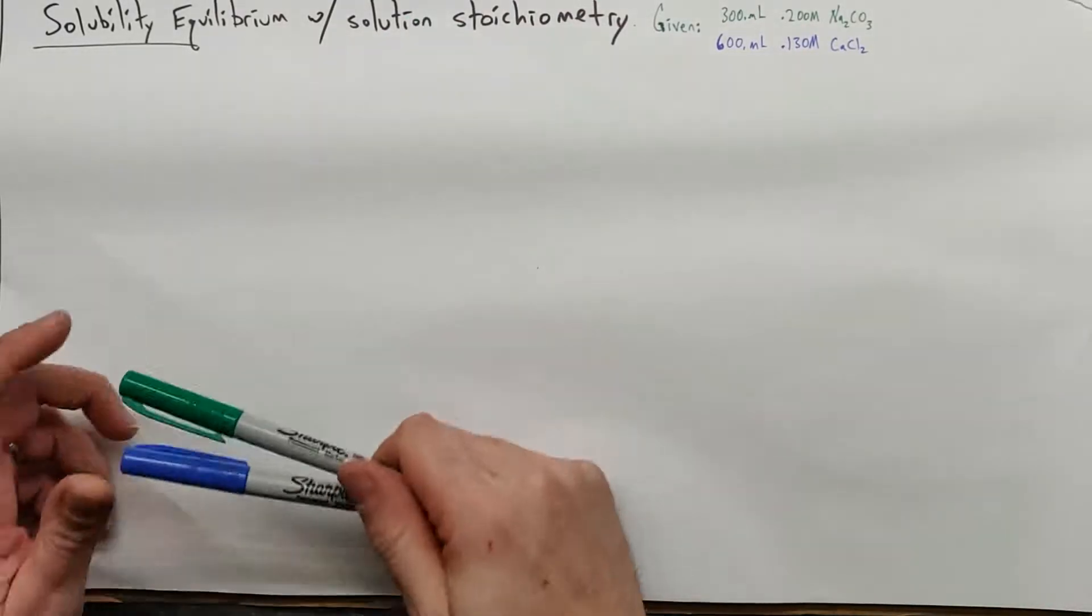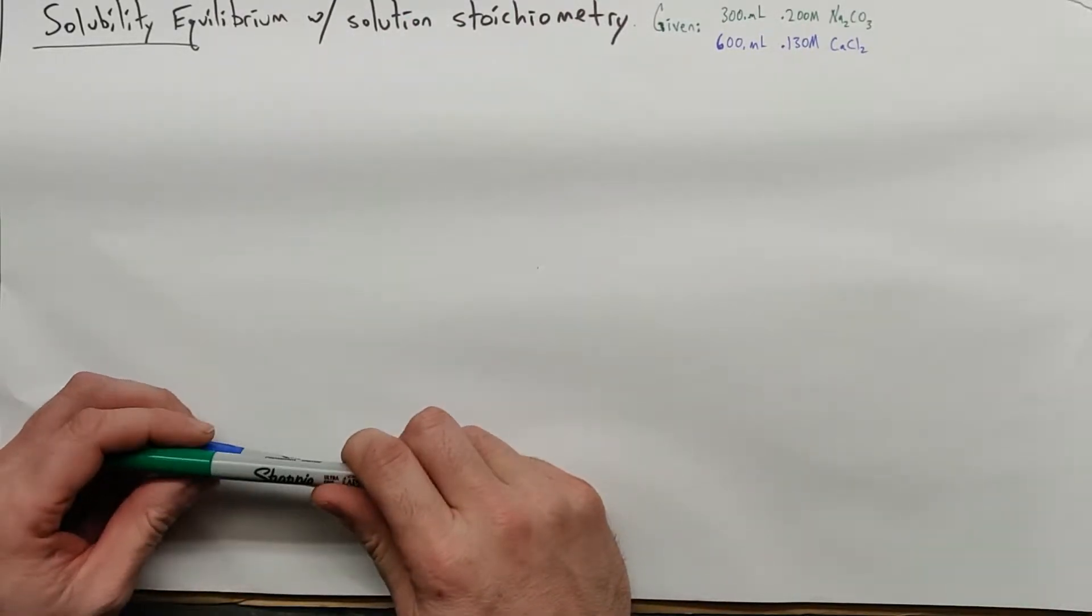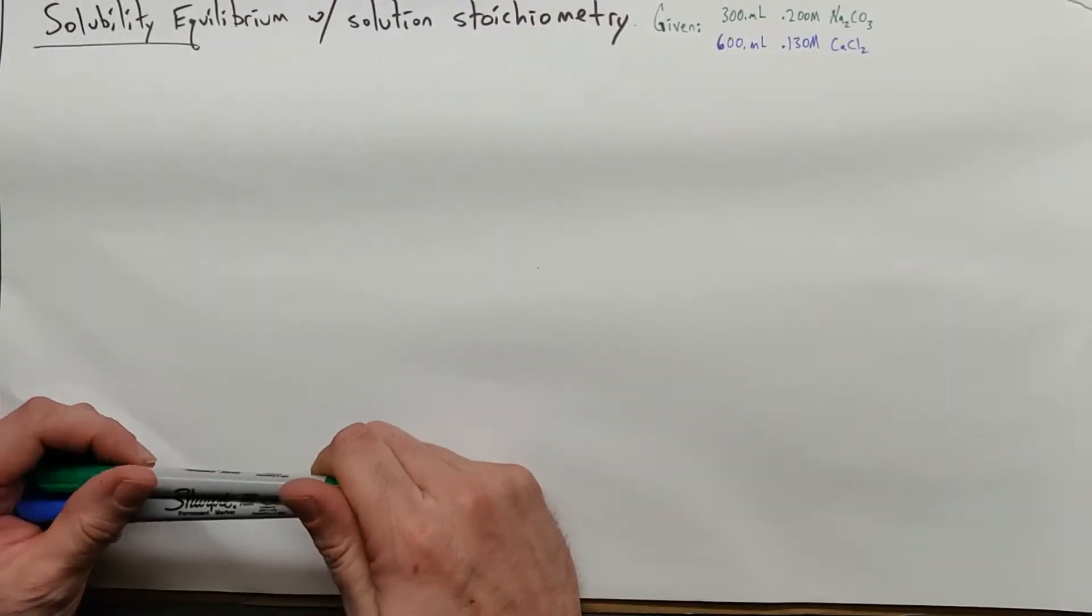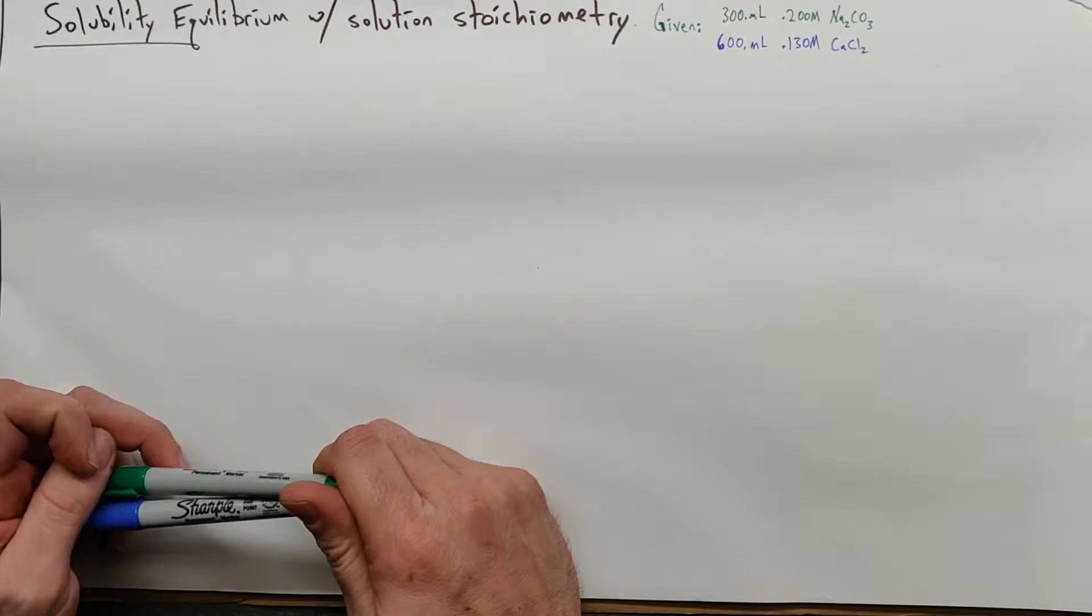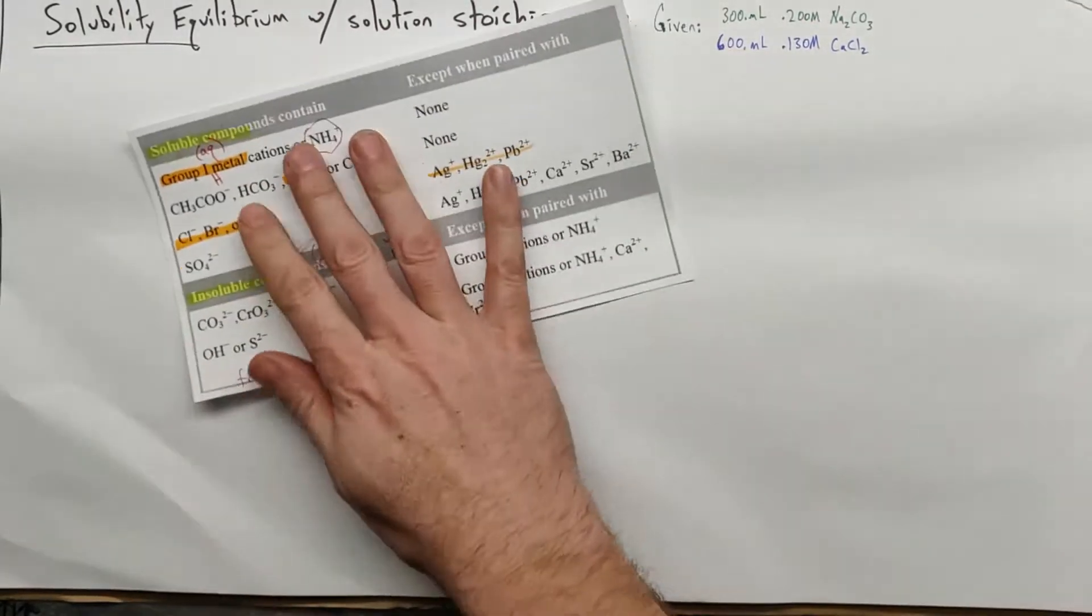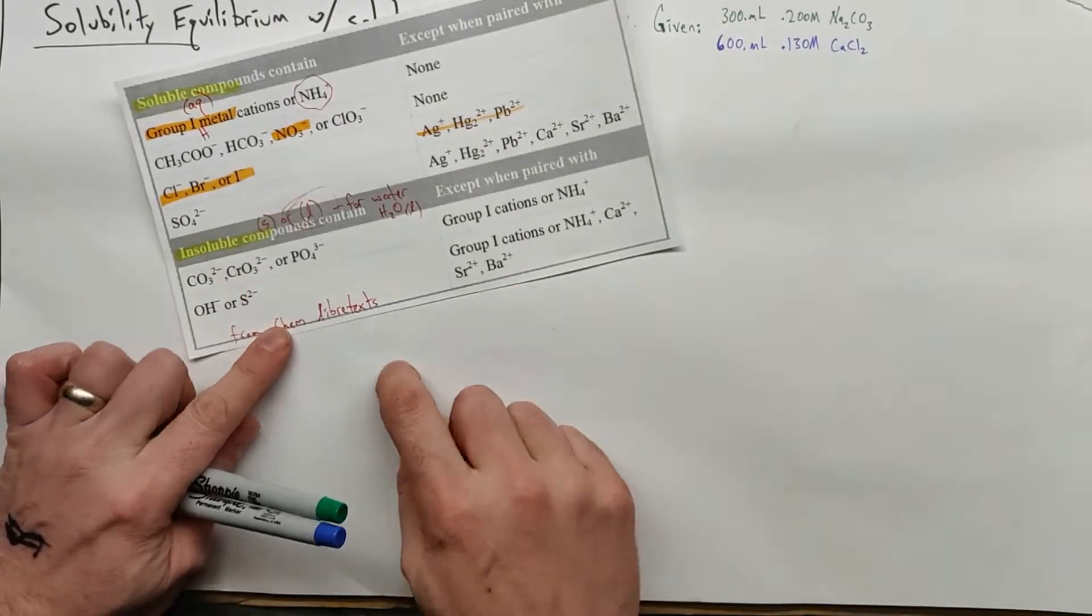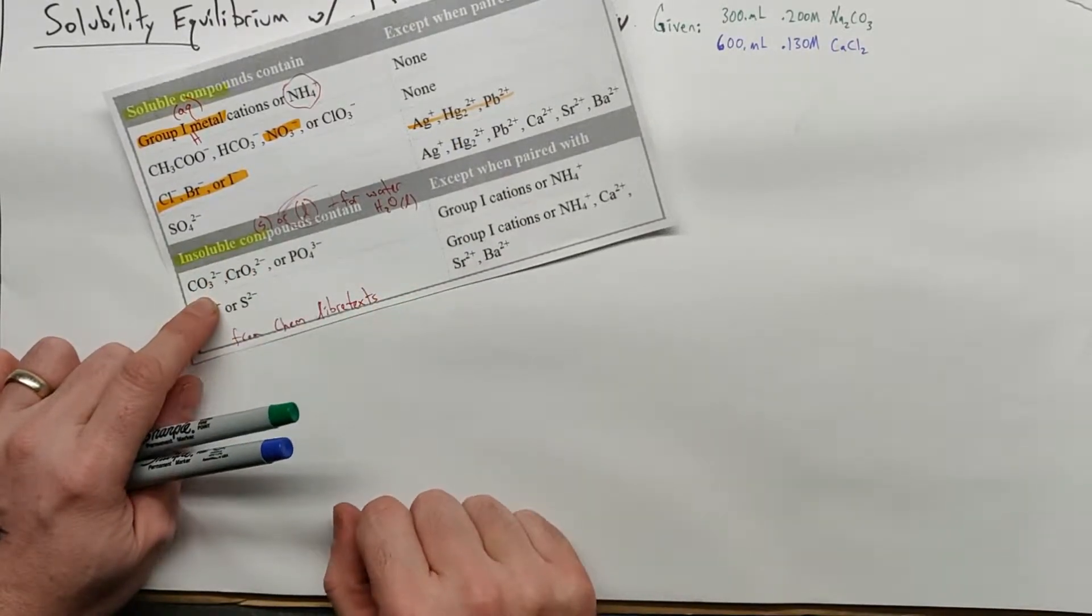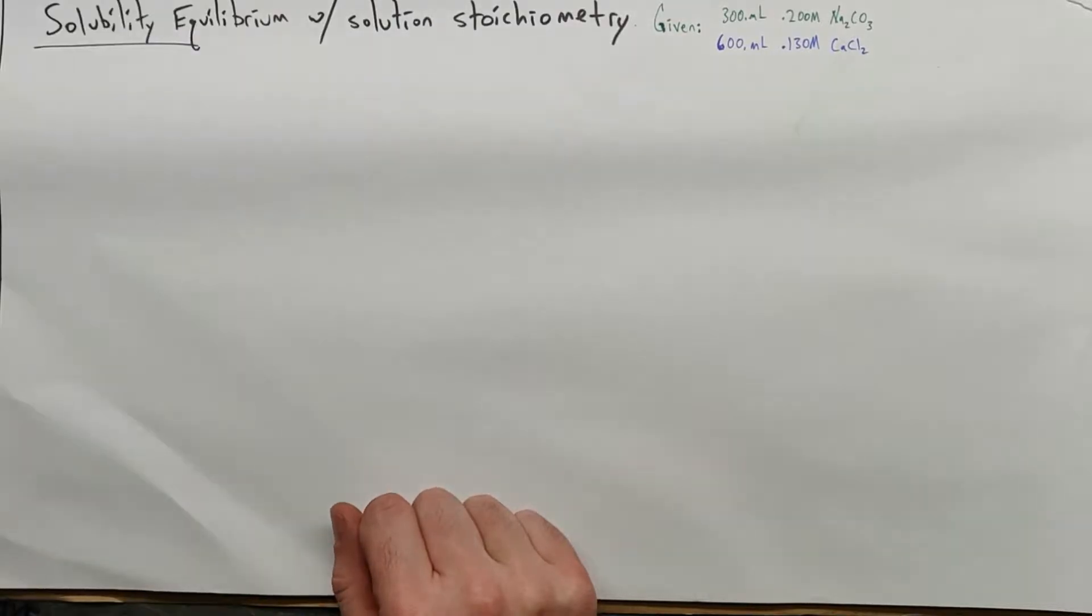Solution stoichiometry problems on their own are massive and nauseating to some degree, so it's a bit terrifying when we think about all these things that we had for solubility from our compounds list. For example, in this problem we're going to have calcium carbonate, which is insoluble. We discussed previously that insoluble doesn't mean it doesn't dissolve, it just means it's a weak electrolyte that doesn't dissolve much.